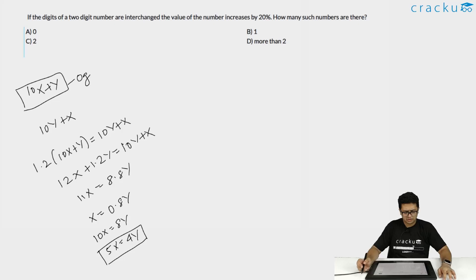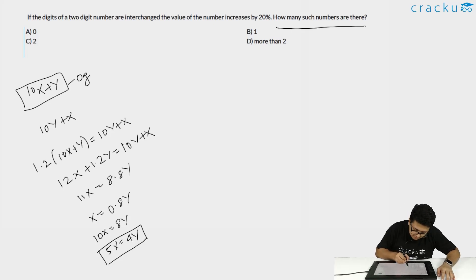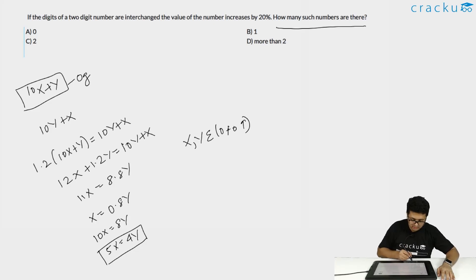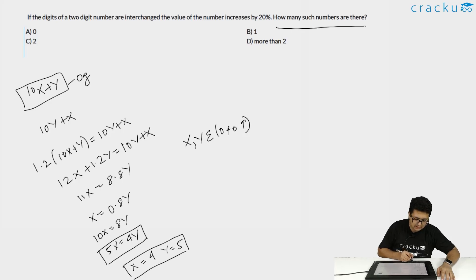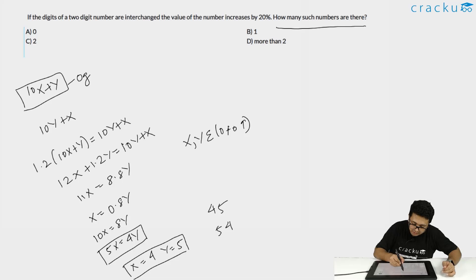We get the relationship 5x = 4y. The question asks: how many such numbers are there? Since 5 and 4 are co-primes, and x and y must be single-digit numbers (0 to 9), the only possible solution is x = 4 and y = 5. So there is only one such number — the original number is 45 and the interchanged number is 54. The answer is B.